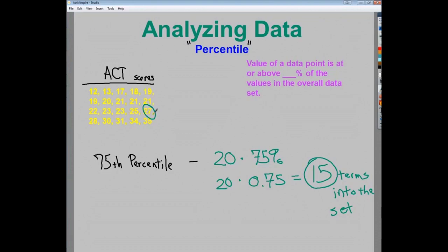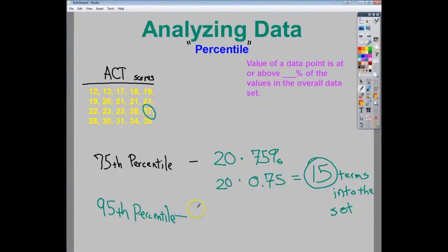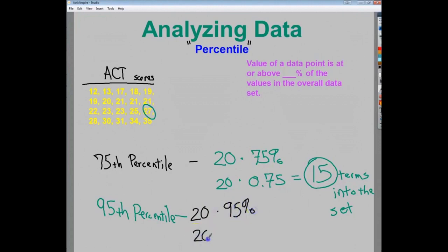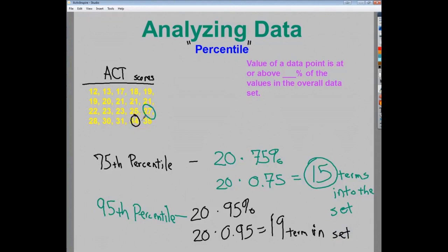If I wanted to be in the 95th percentile, I take the same 20 terms and multiply by 0.95, which gives me the 19th term in the set. In order to be in the 95th percentile of this group, I need to score a 34. So that's all percentile means — it's not overly complicated, but occasionally you'll get a question about this, and this is the way to find it.